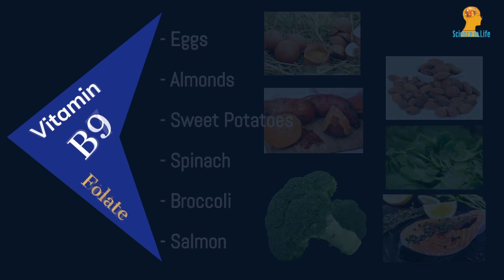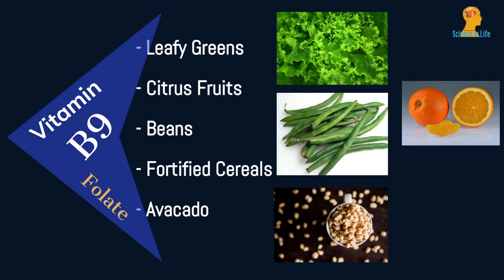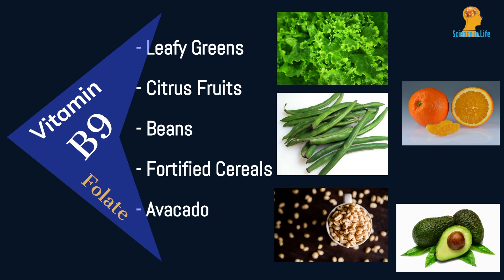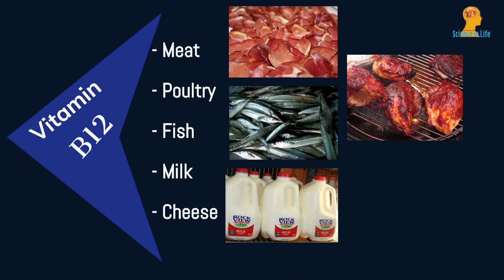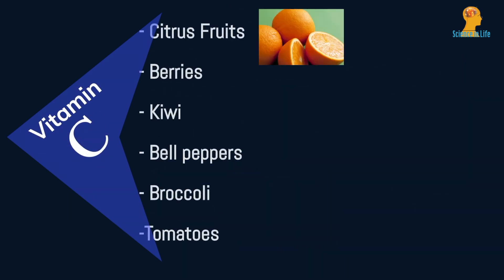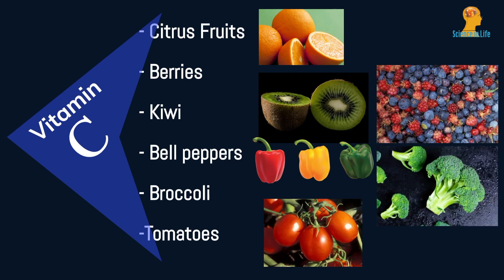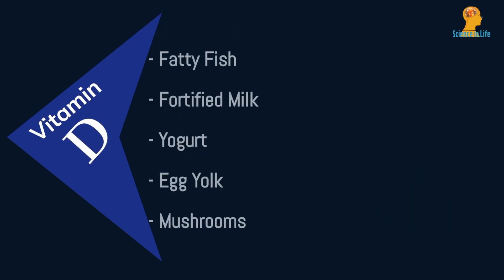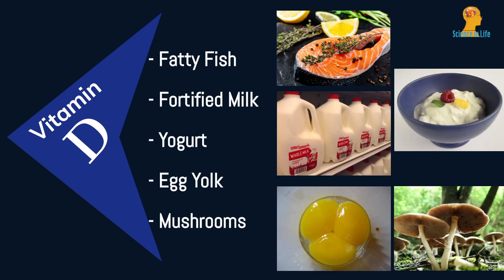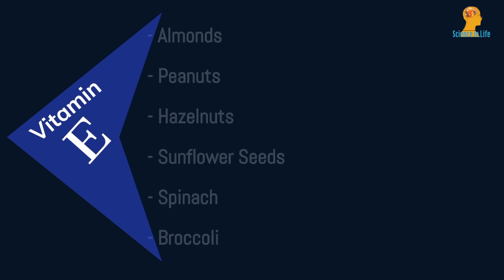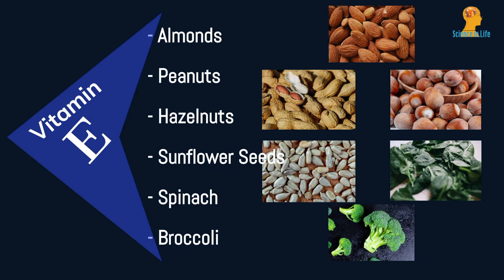Vitamin B9: leafy greens, citrus fruits, beans, fortified cereals, and avocado. Vitamin B12: meat, poultry, fish, milk, and cheese. Vitamin C: citrus fruits, berries, kiwi, bell peppers, broccoli, and tomatoes. Vitamin D: fatty fish, fortified milk and yogurt, egg yolks, and mushrooms. Vitamin E: almonds, peanuts, hazelnuts, sunflower seeds, spinach, and broccoli.